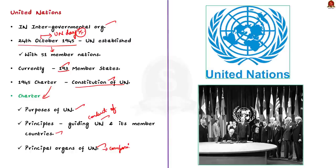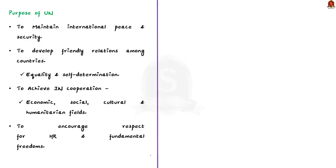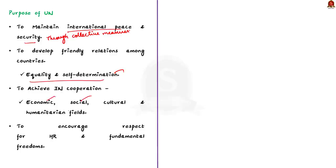The UN has four main purposes. Firstly, to maintain international peace and security through collective measures. Secondly, to develop friendly relations among countries based on the principle of equality and self-determination. Thirdly, to achieve international cooperation in the economic, social, cultural, and humanitarian fields. Finally, to encourage respect for human rights and fundamental freedoms. To promote these goals, the United Nations has six principal organs: the General Assembly, the Security Council, the Economic and Social Council, the Trusteeship Council, the International Court of Justice, and the Secretariat.